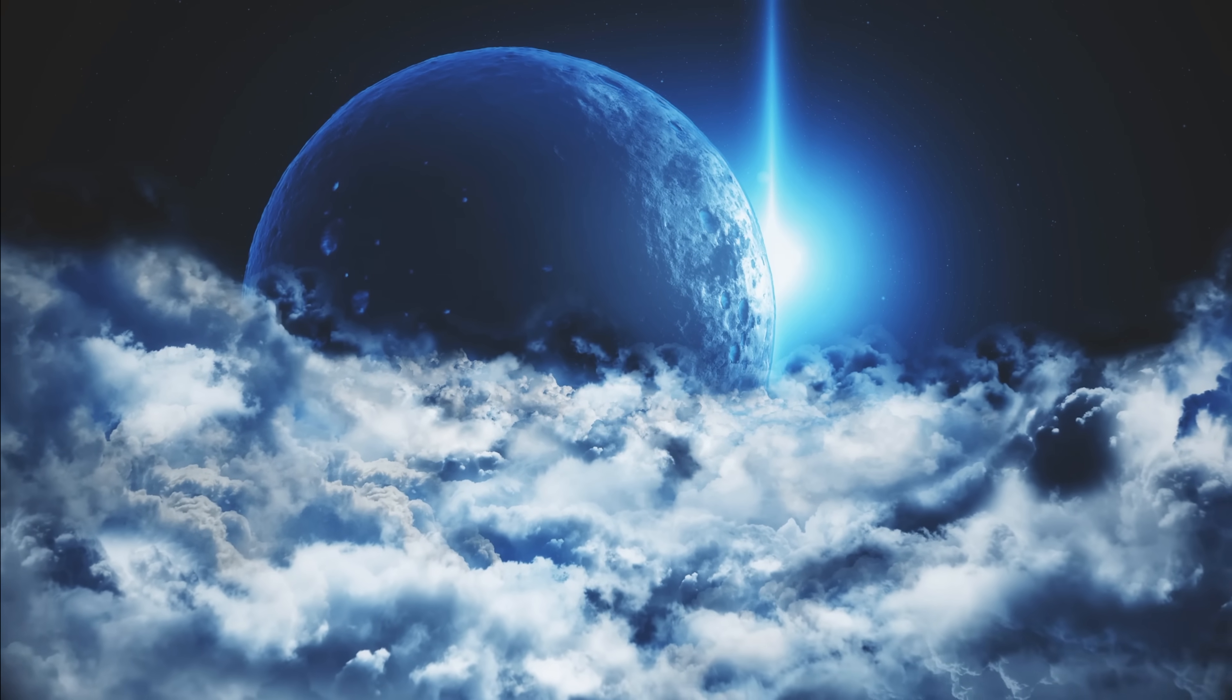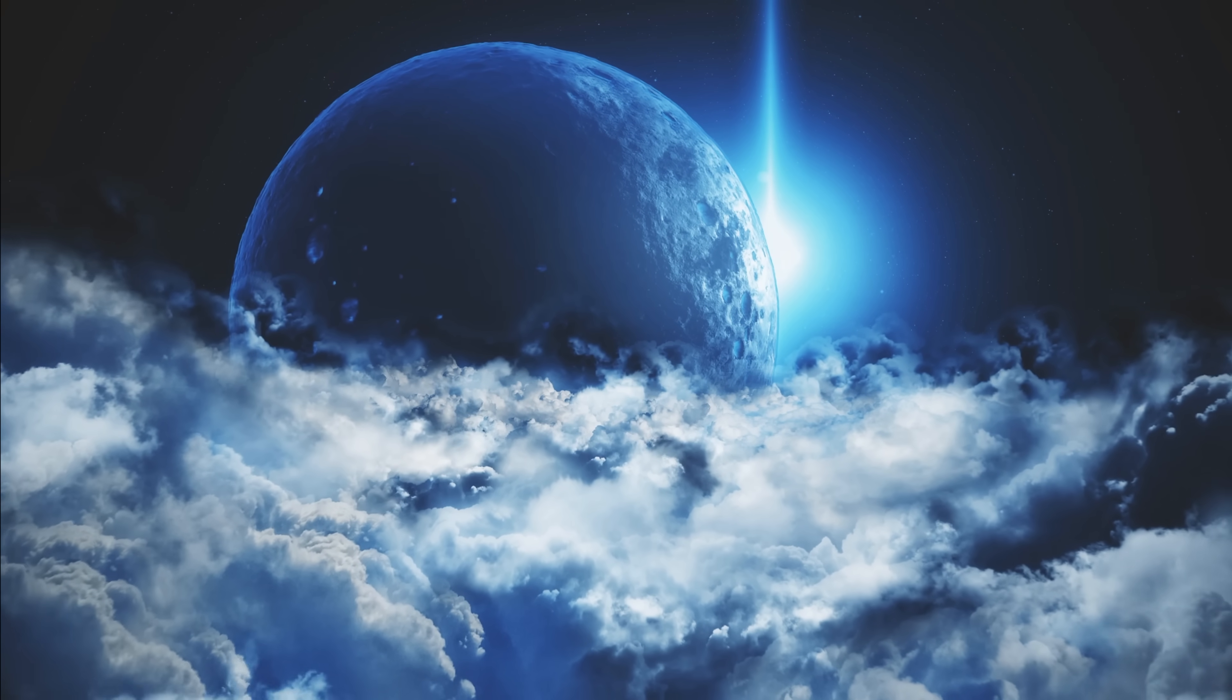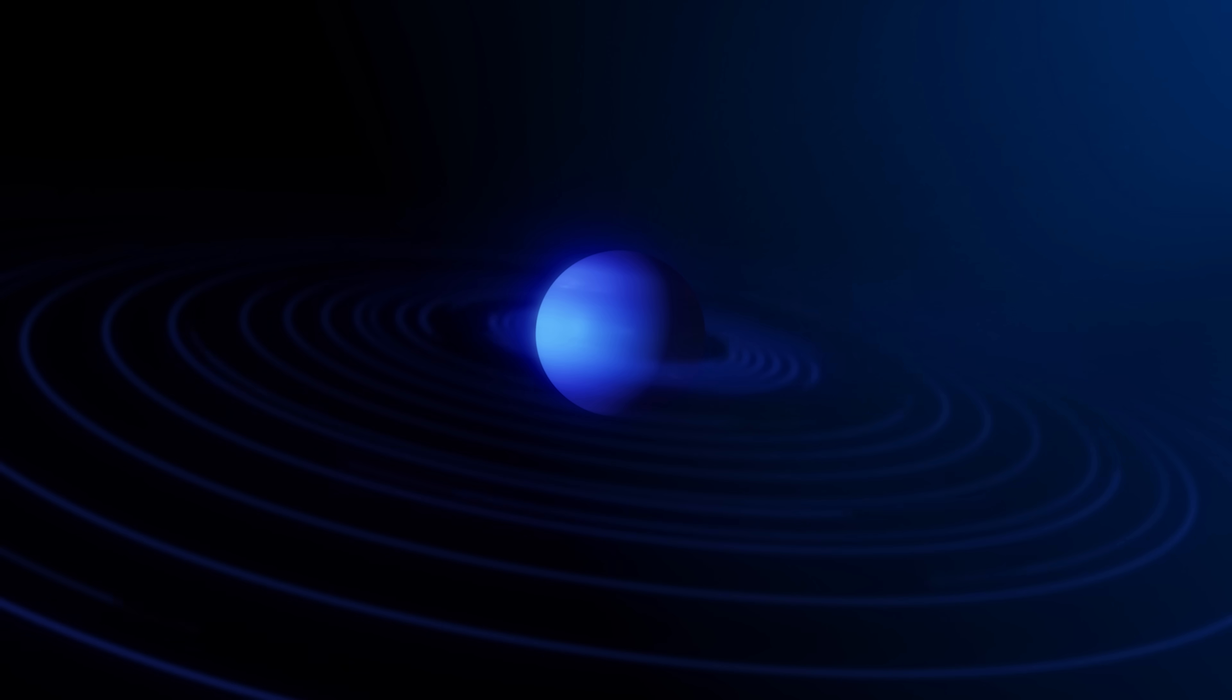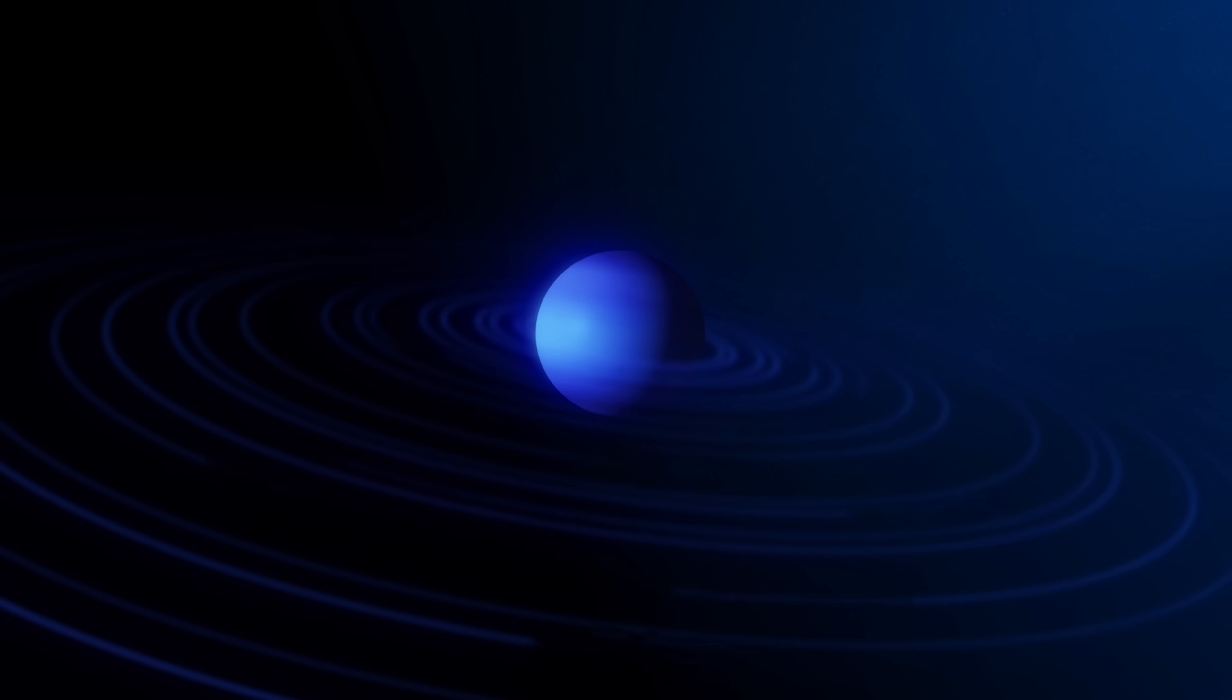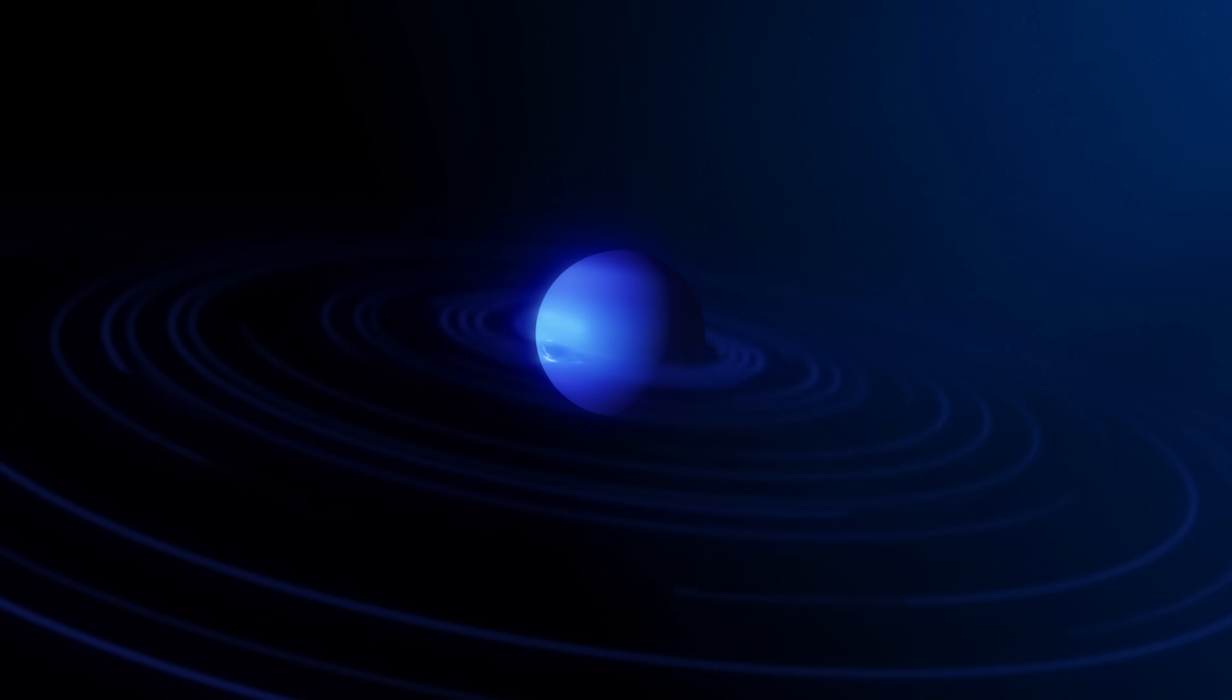This theory proposes that instead of a single massive planet, a disk of icy, rocky bodies in the outer solar system could have enough collective mass to cause the observed perturbations. The massive disk could exert a gravitational force that aligns the orbits of TNOs and make them more elliptical and inclined.